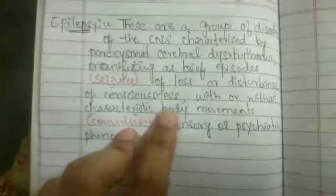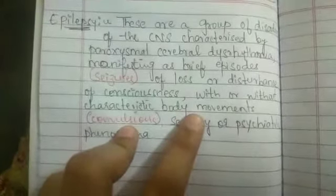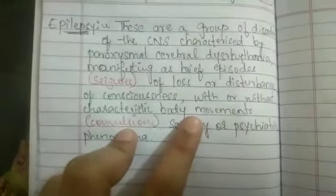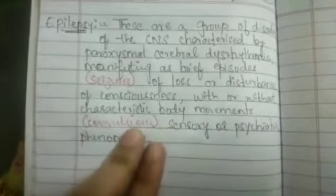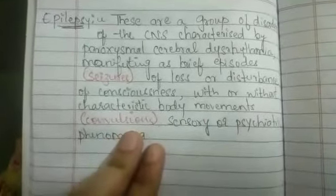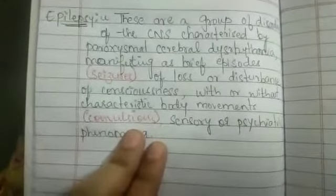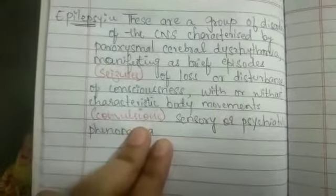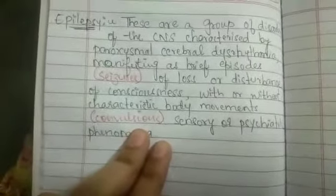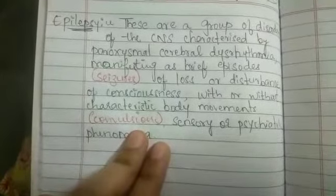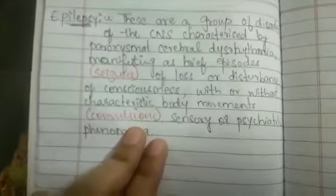Body movement means obviously here motor neurons are being involved. That is known as convulsions. So convulsions may involve continuous muscle contractions.